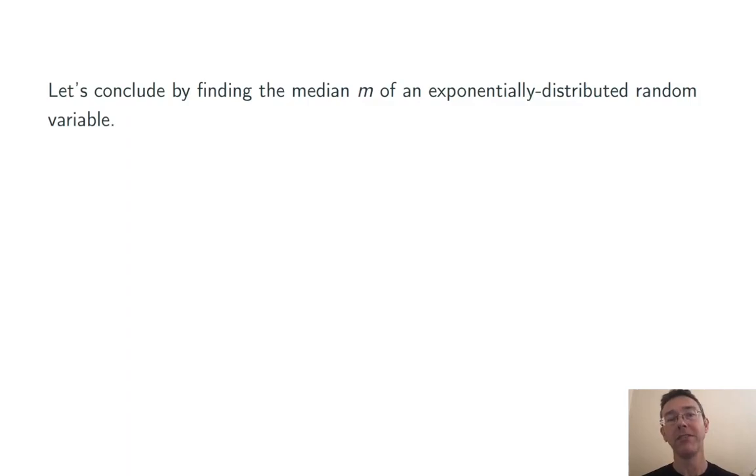Let's conclude by finding the median m of an exponentially distributed random variable. This is the unique value m such that the probability that x is less than m is 0.5. So we can just plug in to the CDF. 1 minus e to the negative m over theta is 0.5. Now we're going to solve this for m.